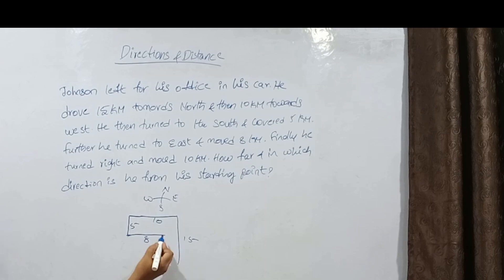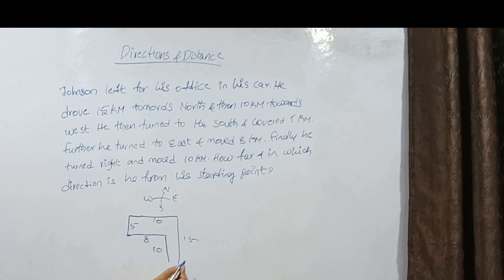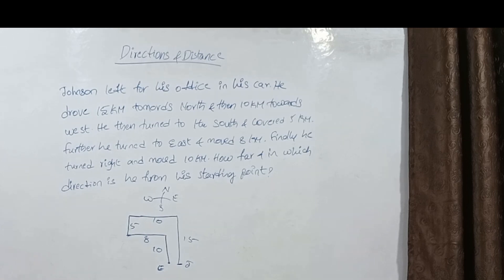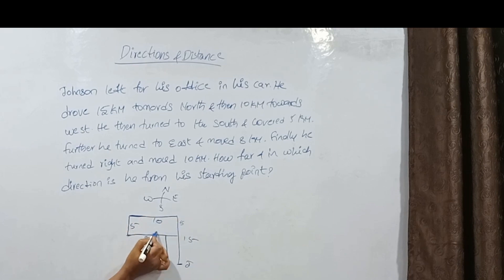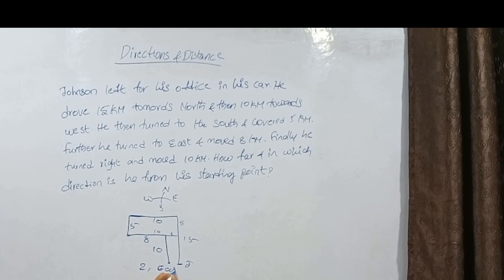He turned right, which is South direction. Here we see the shape forms a rectangle. The rectangle shape: 10 km West, 8 km East gives a 2 km difference. Here, 5 km South, 10 km South gives a distance. East direction, 2 km. So, 2 km East is our right answer.